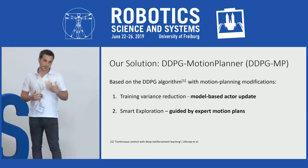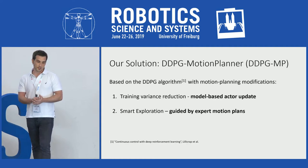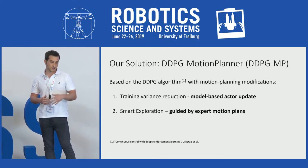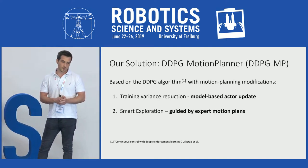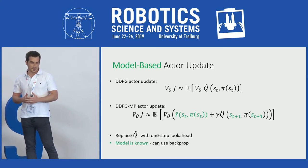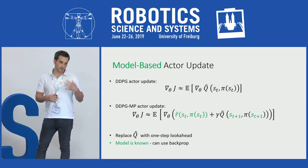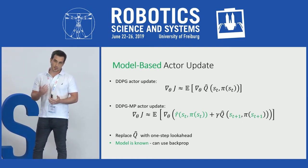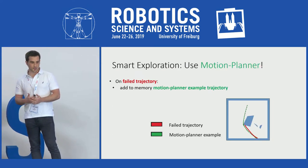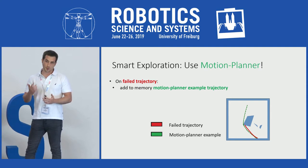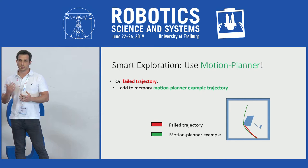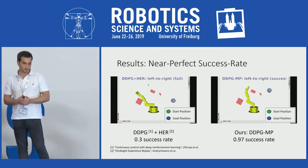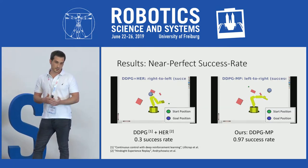We propose the DDPG motion planner, an extension of the DDPG algorithm with two modifications. First, we change the actor update into a model-based actor update. Second, we provide a new exploration strategy based on expert motion plans generated by a motion planner. For the first feature, we decompose the old actor update into two new components — the reward model and the dynamics model — which we know in advance and model using smooth functions compatible with backpropagation. For the second feature, when the agent collides with an obstacle, we provide the replay buffer with a successful motion plan generated by a motion planner.